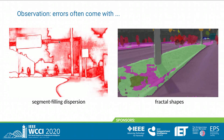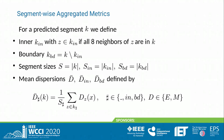Looking at uncertainty maps and predicted segmentations, we made two important observations: first, we often get segment-filling dispersion when we have wrong or bad predictions; and second, we often get fractal-shaped segments, as already observed in some of the previous images.